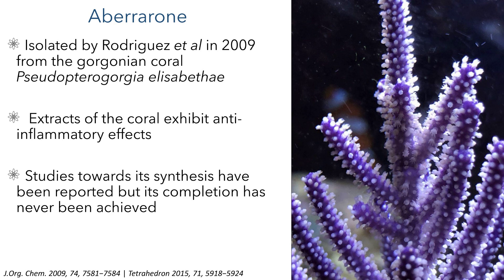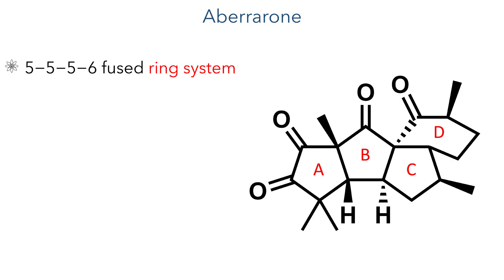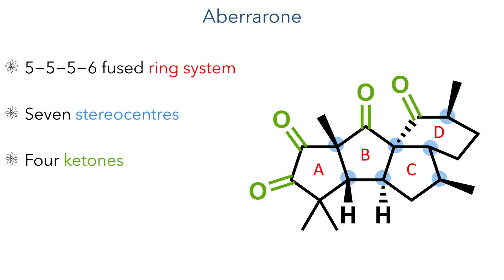A lot of research has been conducted into synthesizing compounds from this family but a complete total synthesis has not yet been reported. Difficulties synthesizing this compound arise from the 5-5-5-6 fused ring system containing seven stereocenters, making this quite a compact yet densely complex molecule. This framework contains four ketones, two of which are contiguous, which adds further rigidity to the complex structure.